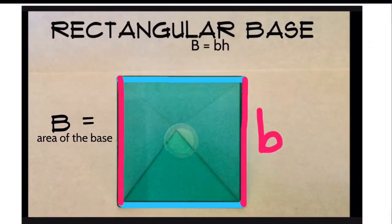In this case, the base is a rectangle. So we know that to find the area, it's B times H. You may also use length times width.